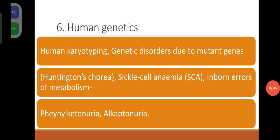Human genetics: human karyotyping. Genetic disorders due to mutant genes — Huntington's chorea, sickle cell anemia. Inborn errors of metabolism: phenylketonuria, alkaptonuria.